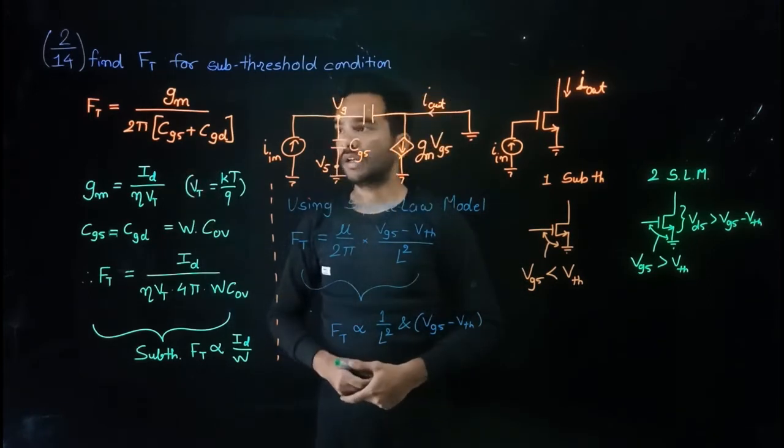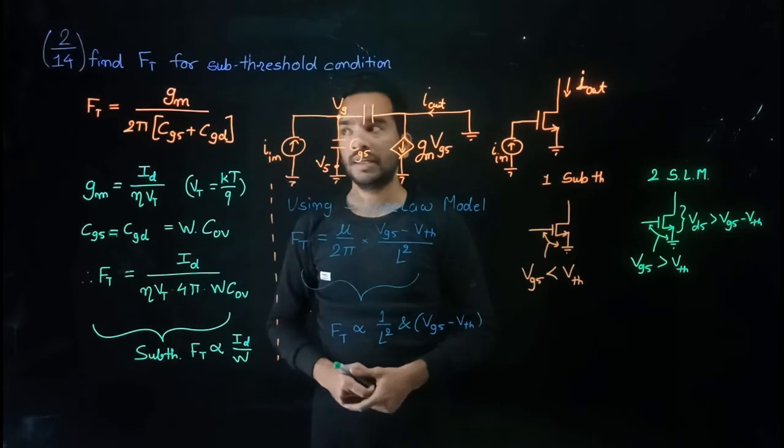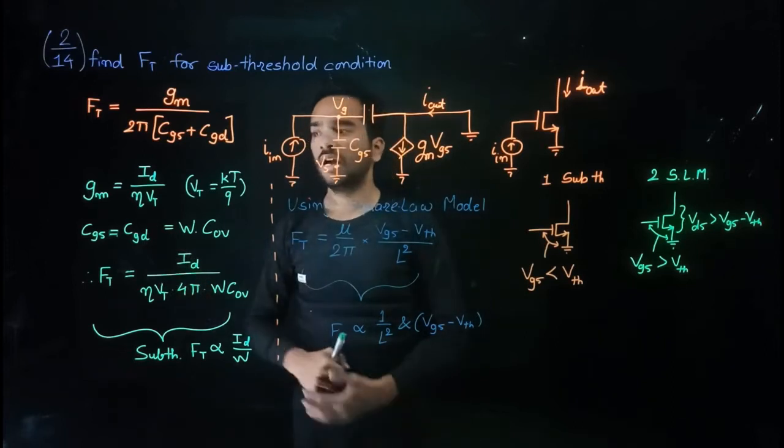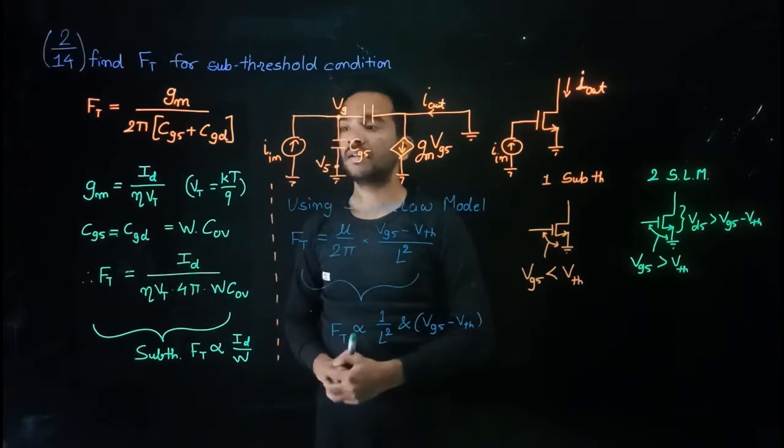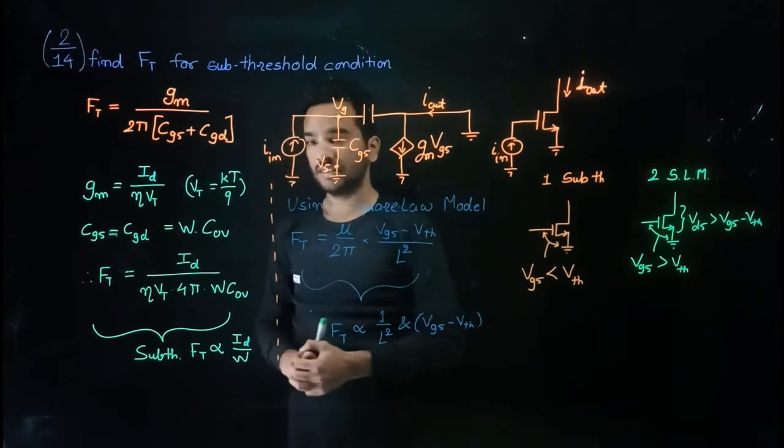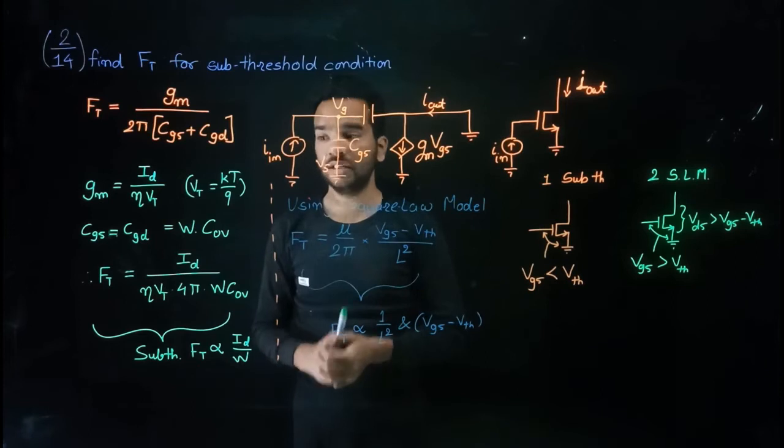So here is the equation of Ft. Ft is gm by 2pi cgs plus cgd. For sub-threshold condition, gm is id over eta vt. Here vt is kt by q. And cgs is equal to cgd is equal to width into c over that.